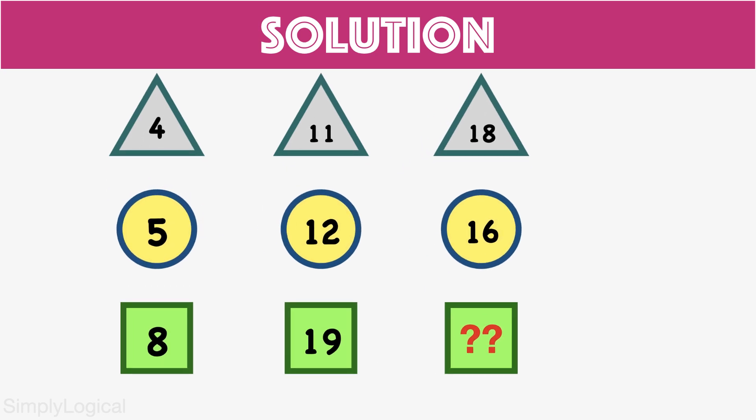Now let's check whether we can perform some basic mathematical operations on the numbers in each row. To begin, let's add the numbers in each row. In the first row, the sum of numbers in triangles is 4 plus 11 plus 18 which equals 33.